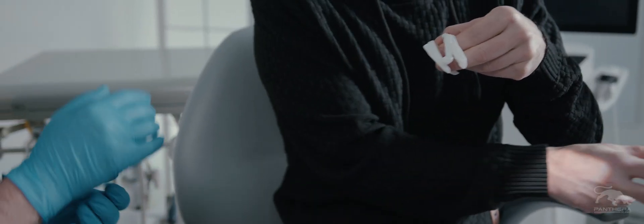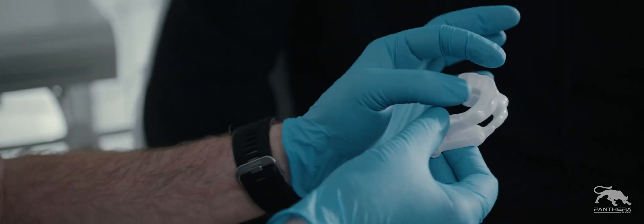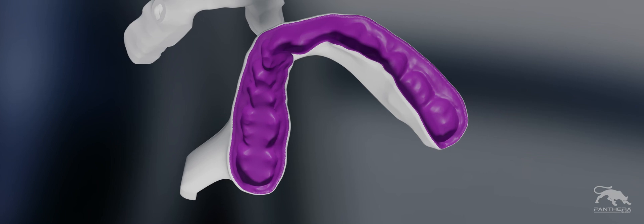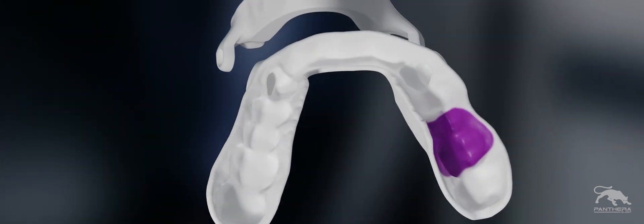It's possible to adjust the retention of a patient's oral appliance by using hot water. This technique can be used if the oral appliance is too tight or too loose all around the arch or on a specific section.